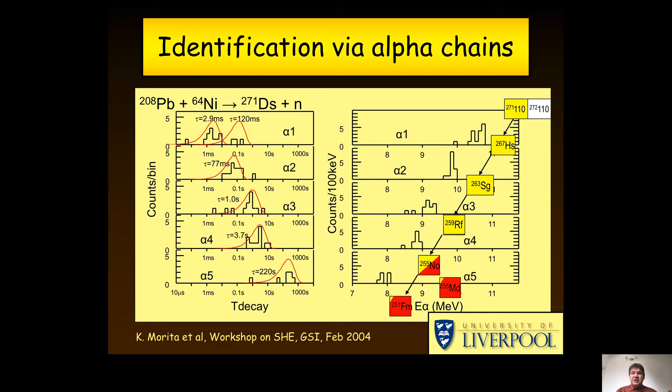One is an alpha decay with 8.8 MeV energy and a half-life of three seconds, characteristic of Rutherfordium-259. The last one is an alpha decay of energy 8 MeV and a half-life of 3.1 minutes, characteristic of 255-Nobelium. Aha! So I can now follow that chain back to the top all the time, simply keeping track how many protons and neutrons have been lost.